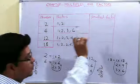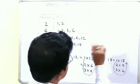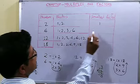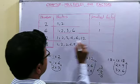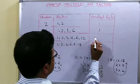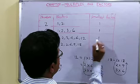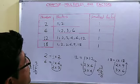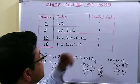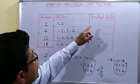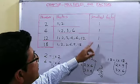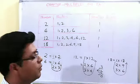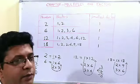Now the main point: what is the smallest factor? Looking at all examples — factors of 2, 6, 12 — the smallest factor is always 1. So the conclusion is that 1 is the factor of any number. Whatever the number, 1 will always be its factor.